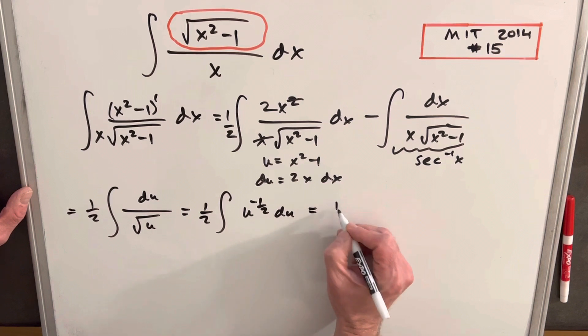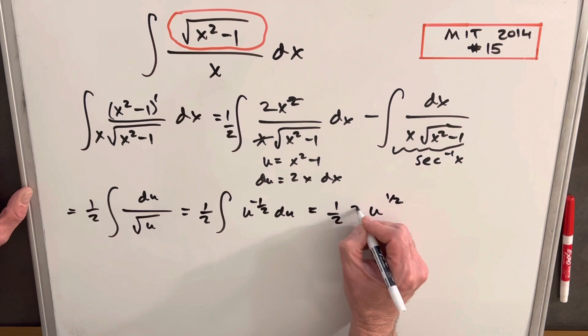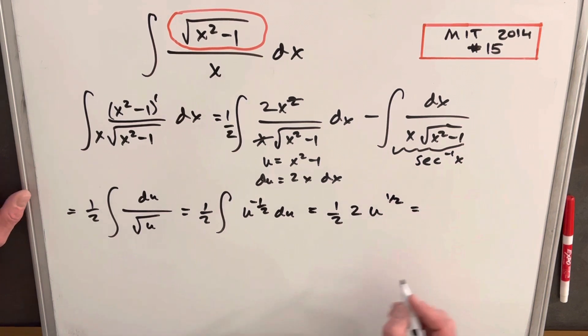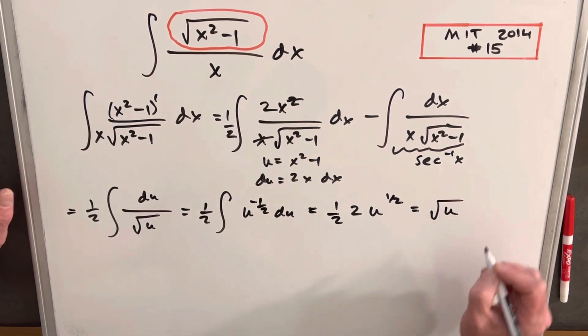And then we'll integrate, 1 half u power rule, 1 half times a 2 in front. And this is just going to be square root of u.